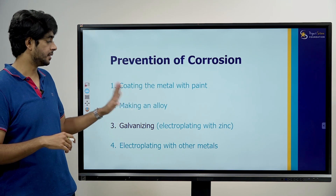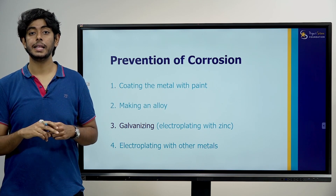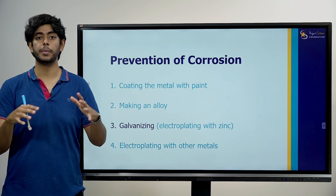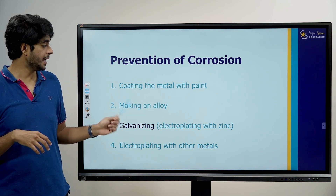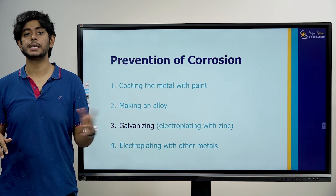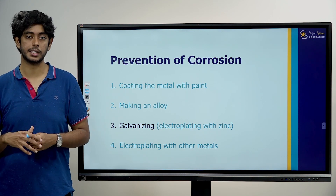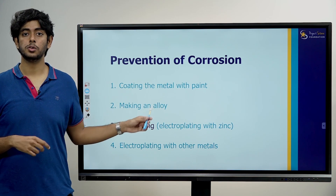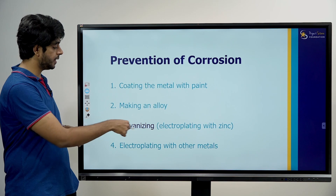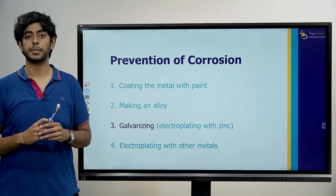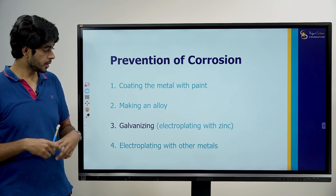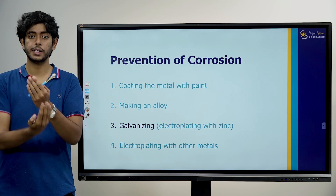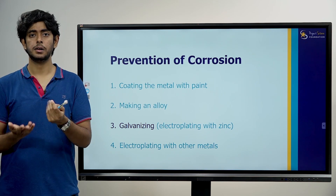The second method is making an alloy. Stainless steel is an alloy — mixing two or more metals together changes the properties, preventing rust. So stainless steel is an alloy of iron. The third method is galvanizing — electroplating with zinc. A zinc coating is applied on the iron, and since zinc is safe, the iron is kept safe.